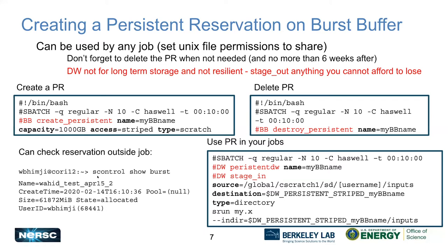The reservation exists outside your job. Use the scontrol show burst command to verify it's set up — this shows examples and the name of what you have. Then to use it in a job, you use these commands, noting that there's a #BB and then a #DW here. You can do things like staging in and out and run your workload.